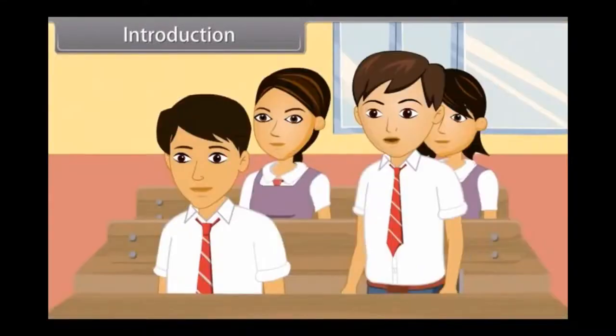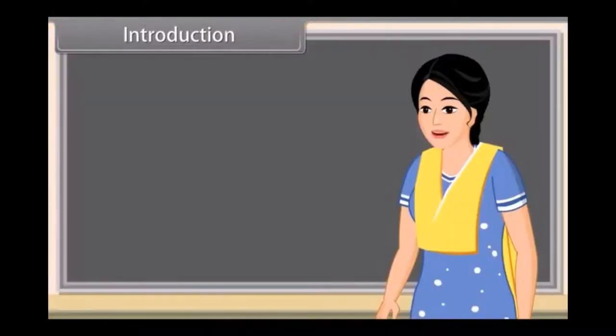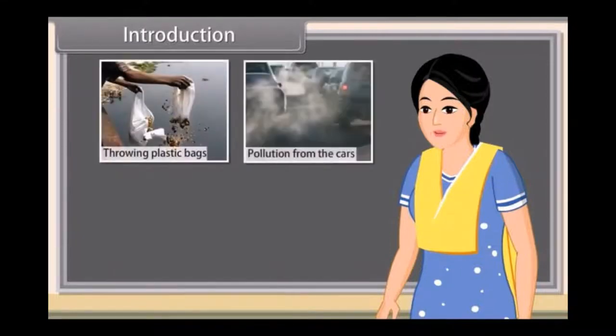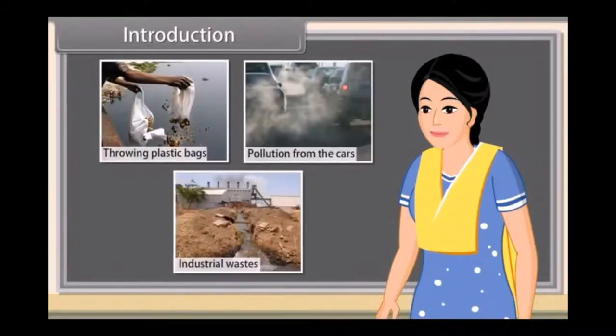How are we making this river polluted? Many of our activities destroy the clean state of rivers such as throwing plastic bags, pollution from the cars, dumping of industrial wastes. Let us explore them in detail and their effects on our environment.